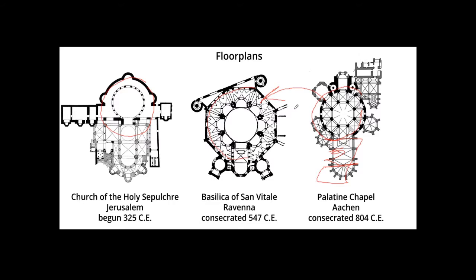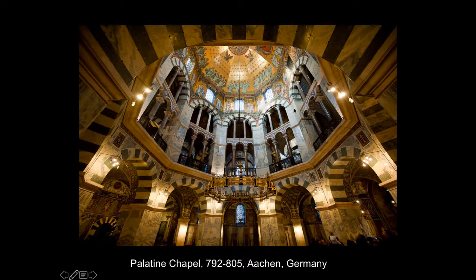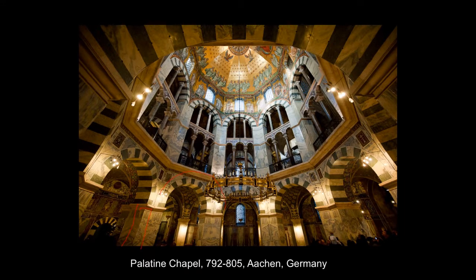When Charlemagne built this structure, he was clearly trying to reference the imperial buildings of Justinian in the East — saying 'I'm an emperor of the West, just like they're an emperor of the East.' Looking at the interior, it does look very Byzantine. The lower levels are decorated with bookmatched marble slabs. We have beautiful polychromy on the arches and mosaics — all Byzantine forms of ornament. This is mostly reconstruction, but it gives a sense of what it would have looked like.